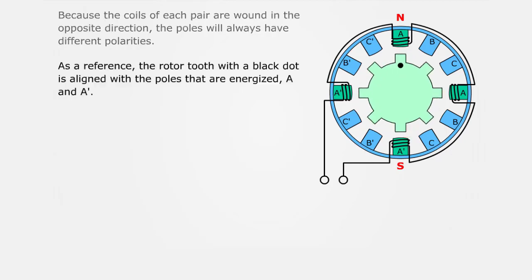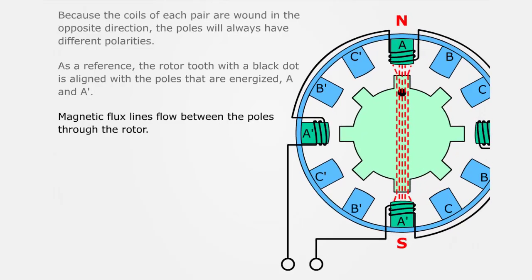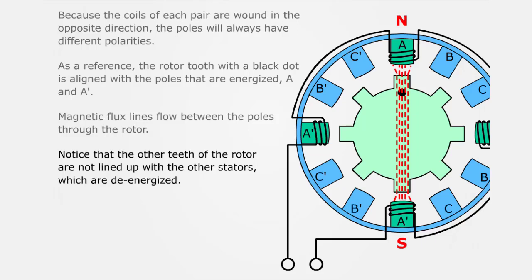As a reference, the rotor tooth with the black dot is aligned with the poles that are energized, A and A'. Magnetic flux lines flow between the poles through the rotor. Notice that the other teeth of the rotor are not lined up with the other stators, which are de-energized.